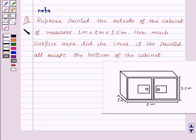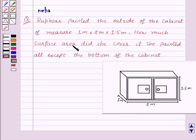Hi and welcome to the session. Today we will discuss the following question: Rukhsar painted the outside of a cabinet measuring 1 meter by 2 meters by 1.5 meters. How much surface area did she cover if she painted all except the bottom of the cabinet?